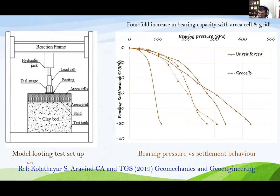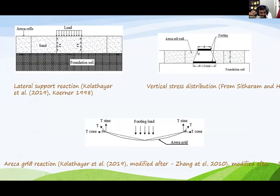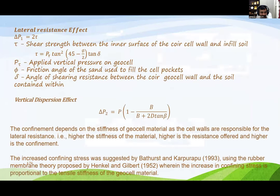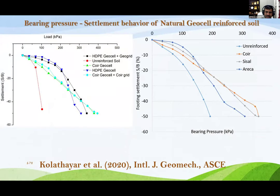We have seen that areca leaf sheath geocells perform at par or sometimes even better than commercially available HDPE geocells. The HDPE geocell costs about 1000 rupees per square meter for 200 mm thickness, while areca leaf sheath is considered agricultural waste and comes free of cost — only labor cost is involved in making the cells. We have analyzed the effect analytically as well for natural geocells — areca, coir, and sisal cells. A paper appeared in the ASCE International Journal of Geomechanics where we used coir geocells, and another published in Geosynthetics and Ground Engineering Journal where we used sisal, jute, etc. In summary, natural material geocells perform as good as HDPE geocells with bearing capacity increases of three to four times.